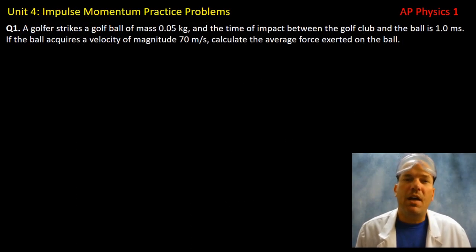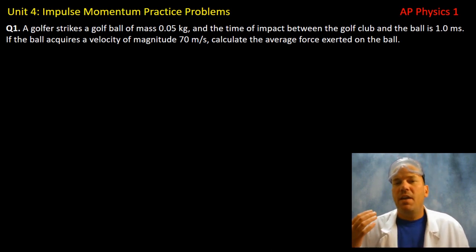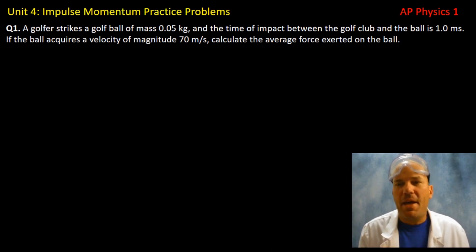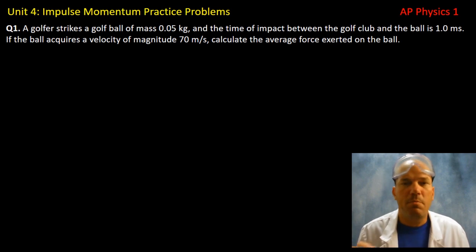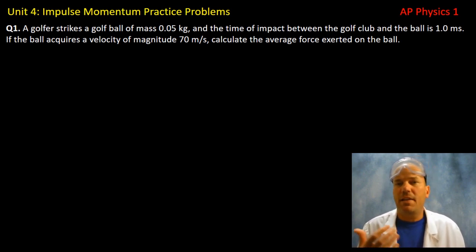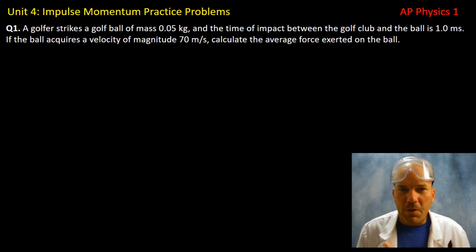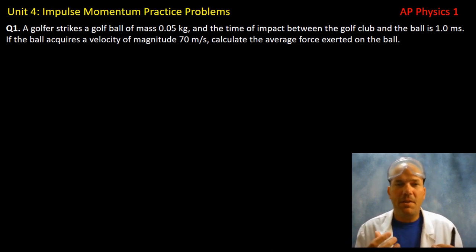Question number one on the impulse-momentum practice problem set: a golfer strikes a golf ball with a mass of 0.05 kilograms, and the time of impact between the golf ball and the golf club is 1.0 milliseconds. The ball acquires a velocity of magnitude 70 meters per second, and we are asked to find the average force exerted on the ball. There was a collision, which means we will use the impulse-momentum theorem.